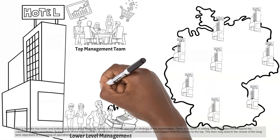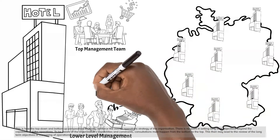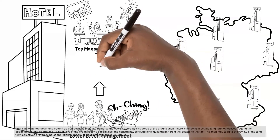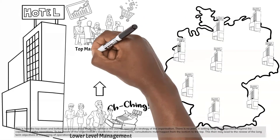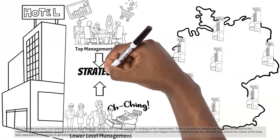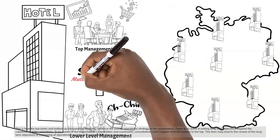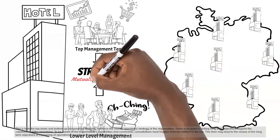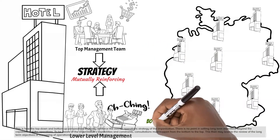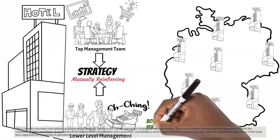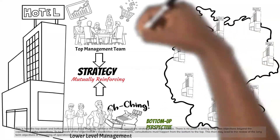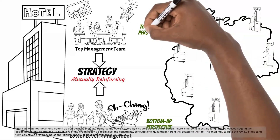This is how the top-down and bottom-up perspectives mutually reinforce the overall operations strategy of the organization. There is no point in setting long-term objectives beyond the capabilities of the operations. To be aware of the organization's capabilities and constraints, consultations must happen from the bottom to the top. This may then lead to the review of long-term objectives or the increasing of operations capacity to accommodate these objectives.